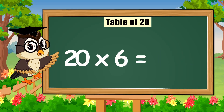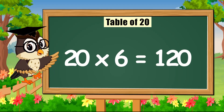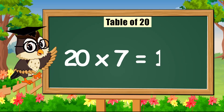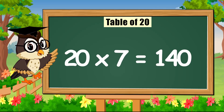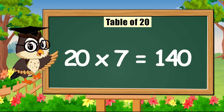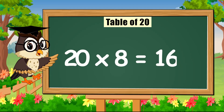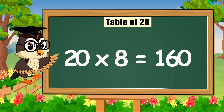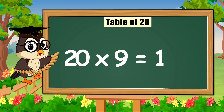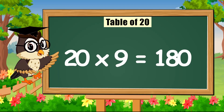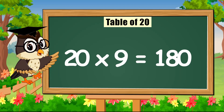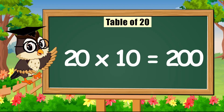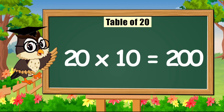20 times 6 is 120. 20 times 7 is 140. 20 times 8 is 160. 20 times 9 is 180. 20 times 10 is 200.